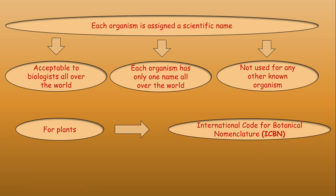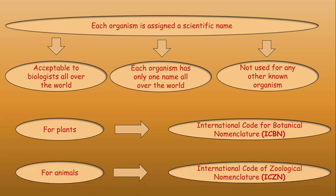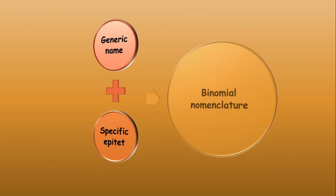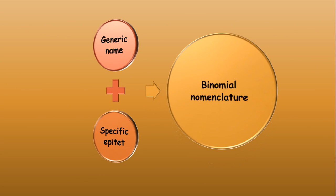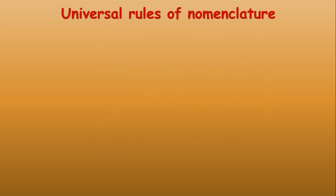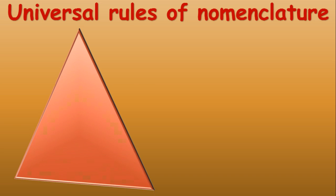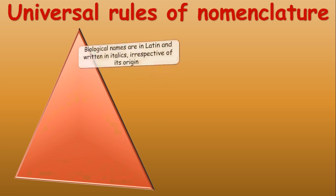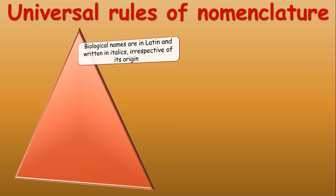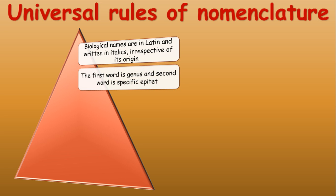For plants, naming is done as per the International Code of Botanical Nomenclature, and for animals, as per the International Code of Zoological Nomenclature. The generic name plus the specific epithet give rise to binomial nomenclature. This nomenclature has universal rules which all biologists must follow to ensure uniformity in naming.